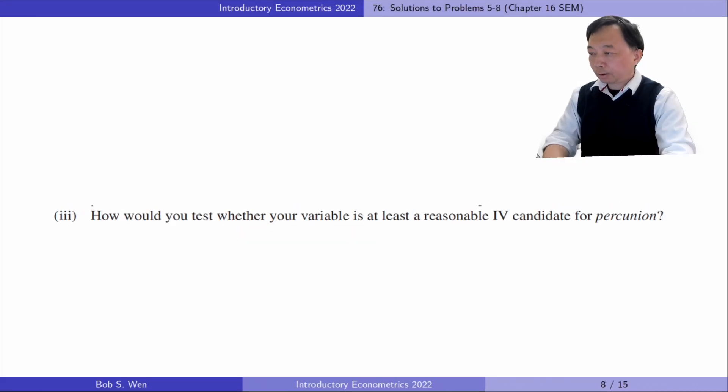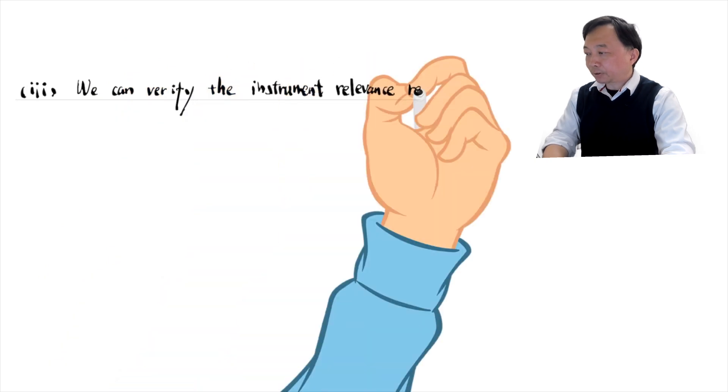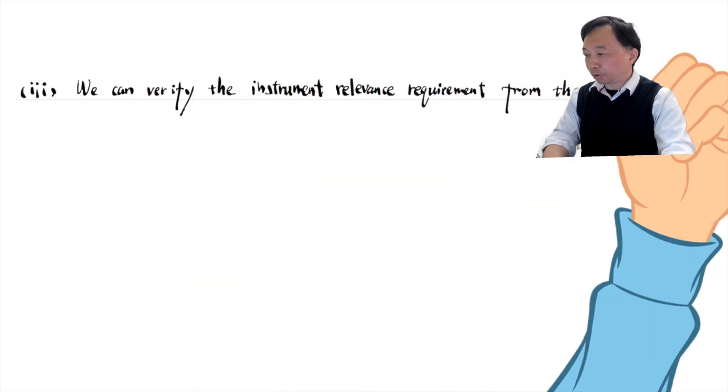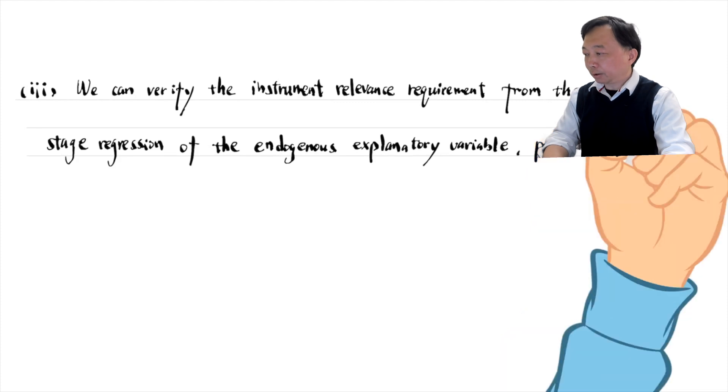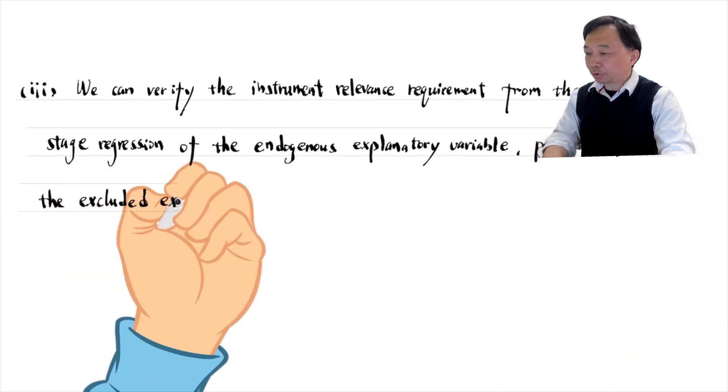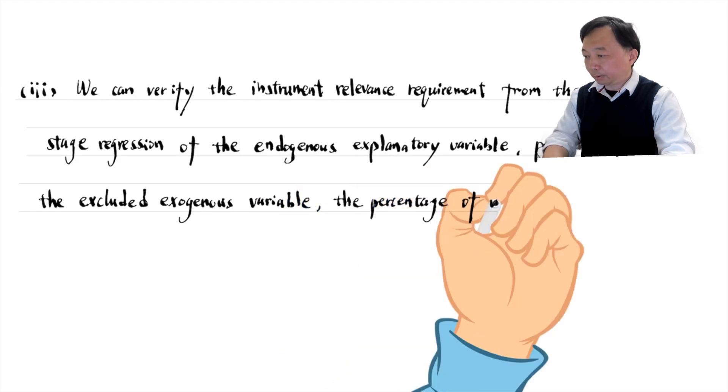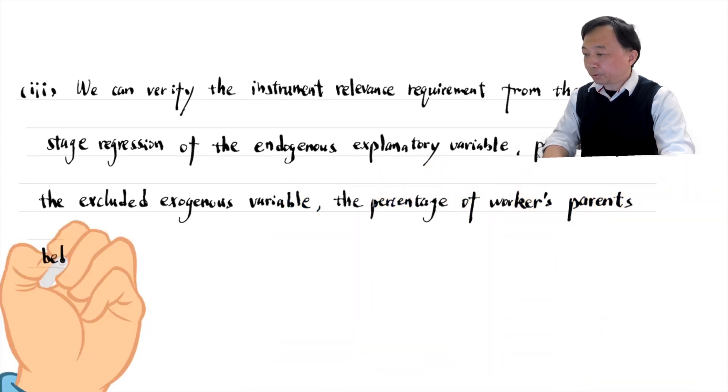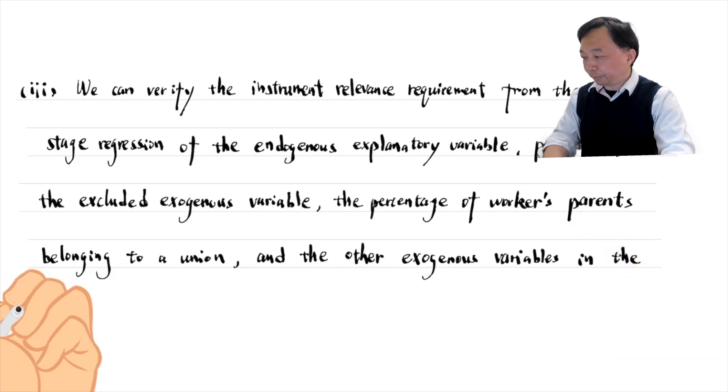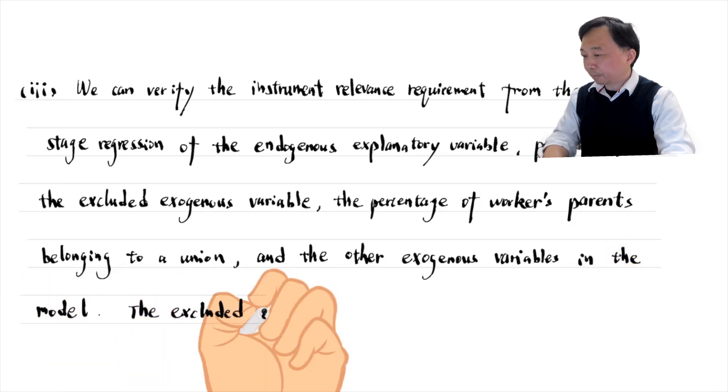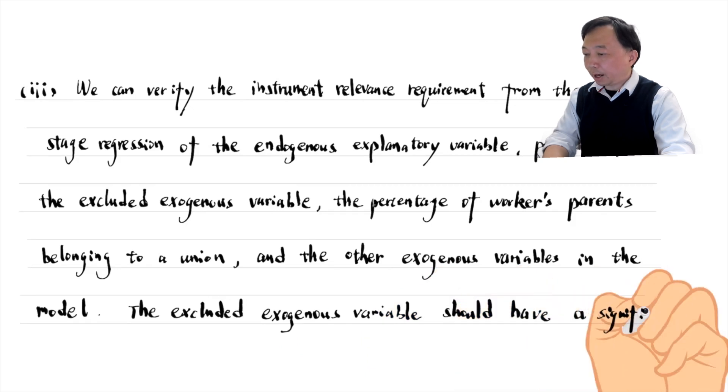In part three, how would you test whether your variable is at least a reasonable IV candidate? We can verify the instrumental relevance requirement from the first stage regression of the endogenous explanatory variable, the percentage of workers belonging to a union, on the excluded exogenous variable, the percentage of workers' parents belonging to a union, and the other exogenous variables in the model. The excluded instrumental variable should have a significant partial effect to become a valid IV. We can do a t-test or an F-test for that.